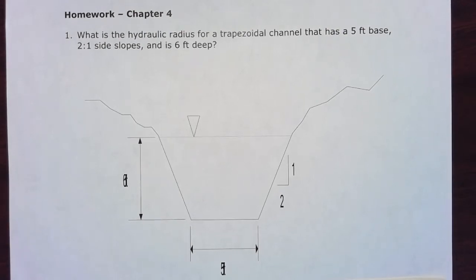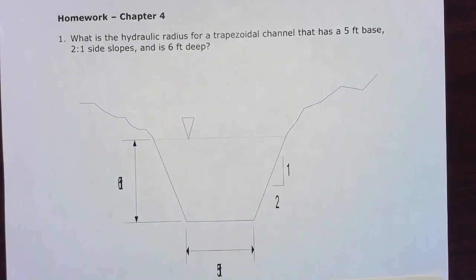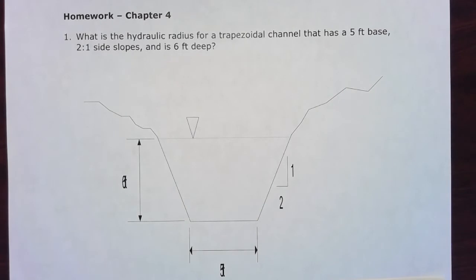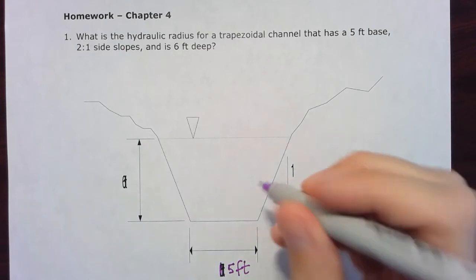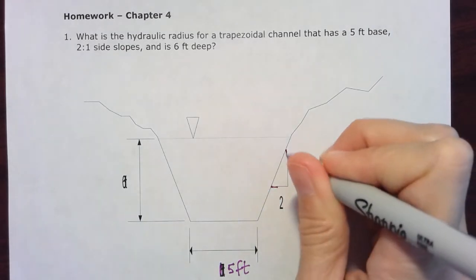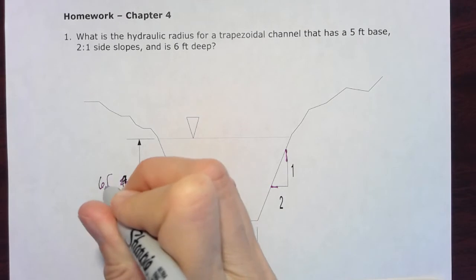The first homework problem for chapter four is asking for the hydraulic radius for a trapezoidal channel that has a five foot base. Everything got a little compressed on this printout, so I'll just rewrite this: five foot base, two to one side slopes, and six feet deep.